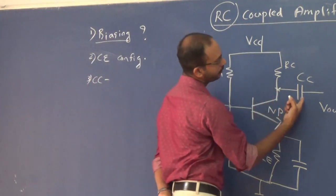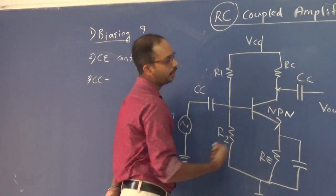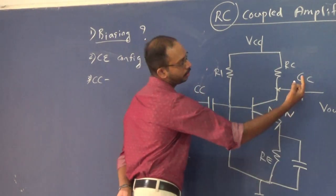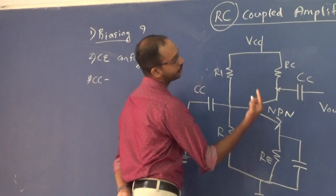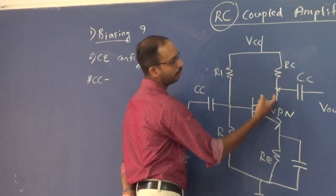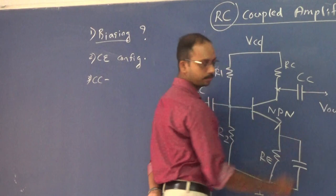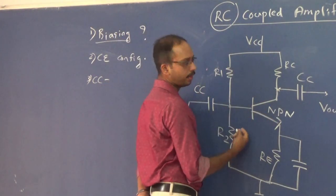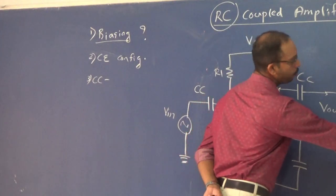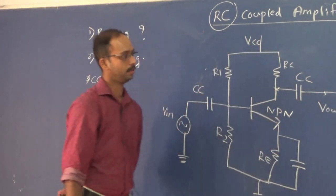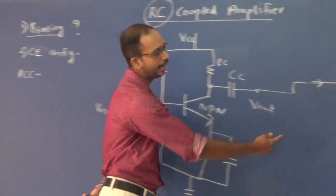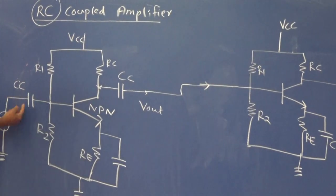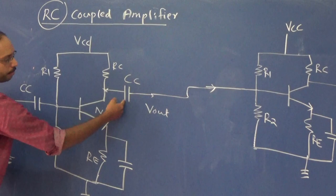Likewise, there is also an output coupling capacitor, which is also a coupling and blocking capacitor. This coupling capacitor couples the output from the collector to the output stage, or we can couple the output of the first amplifier to the input of the second amplifier, thereby making a two-stage amplifier. So we have coupling capacitor 1 and coupling capacitor 2.